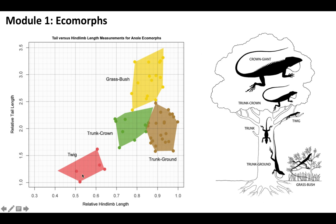With the twig anole, we see they have a relatively short leg length compared to their body, and also a relatively short tail length. Looking at the image, the twig lizard has pretty short legs and a pretty short tail. That makes a lot of sense based on its environment — it's living on small twigs. Having shorter limbs and tails makes it easier to hold on to those twigs.